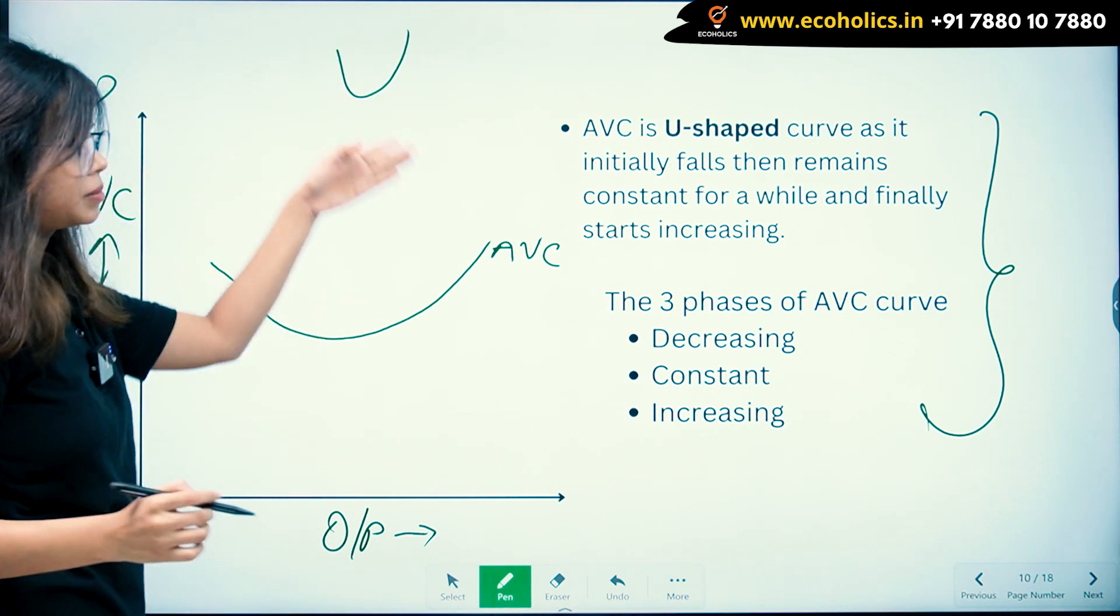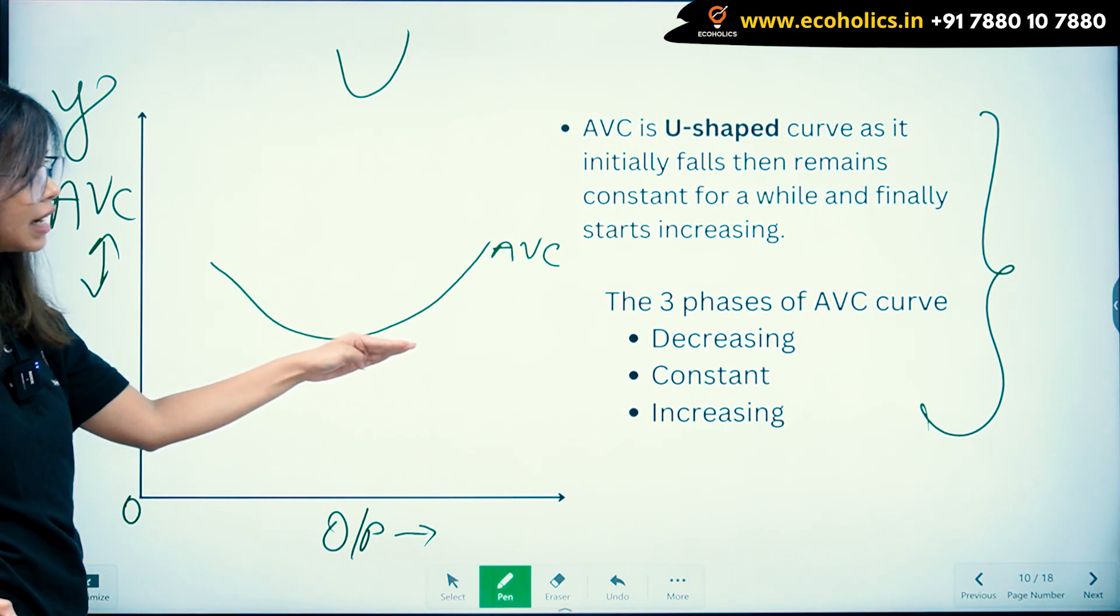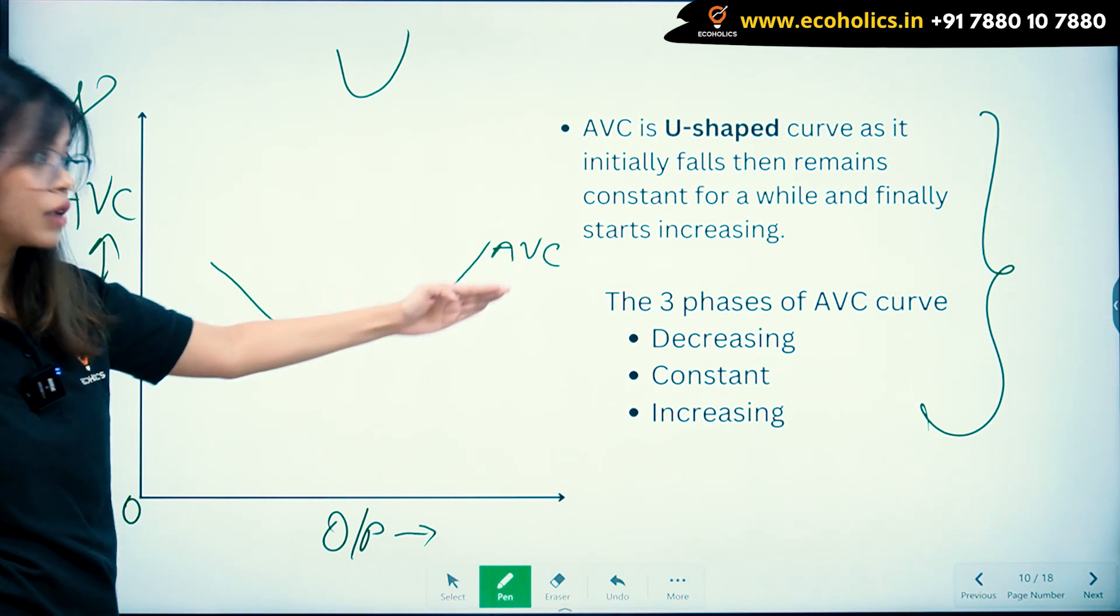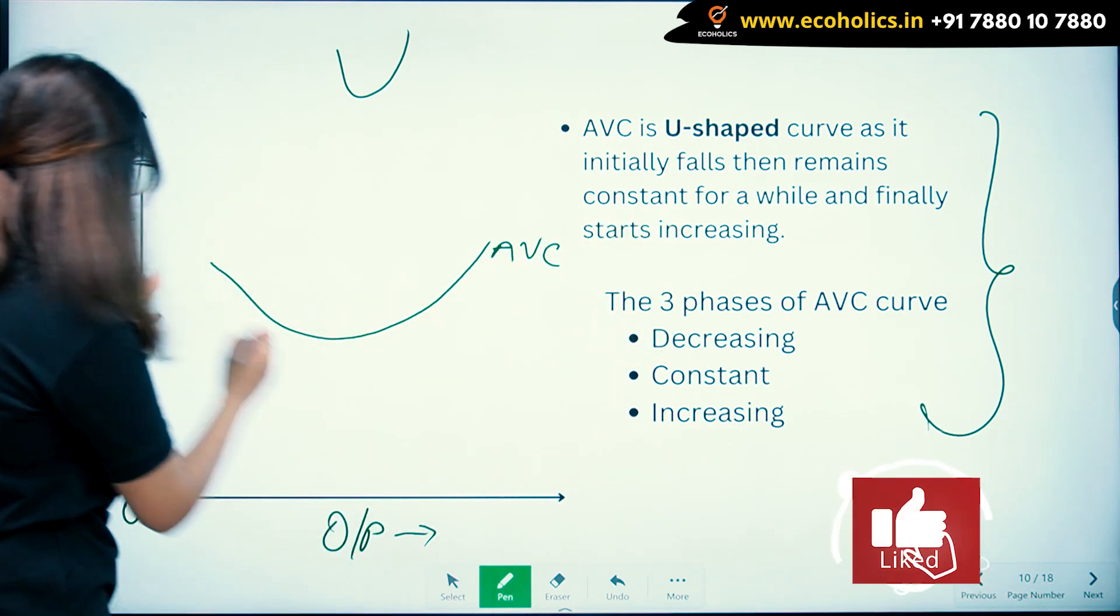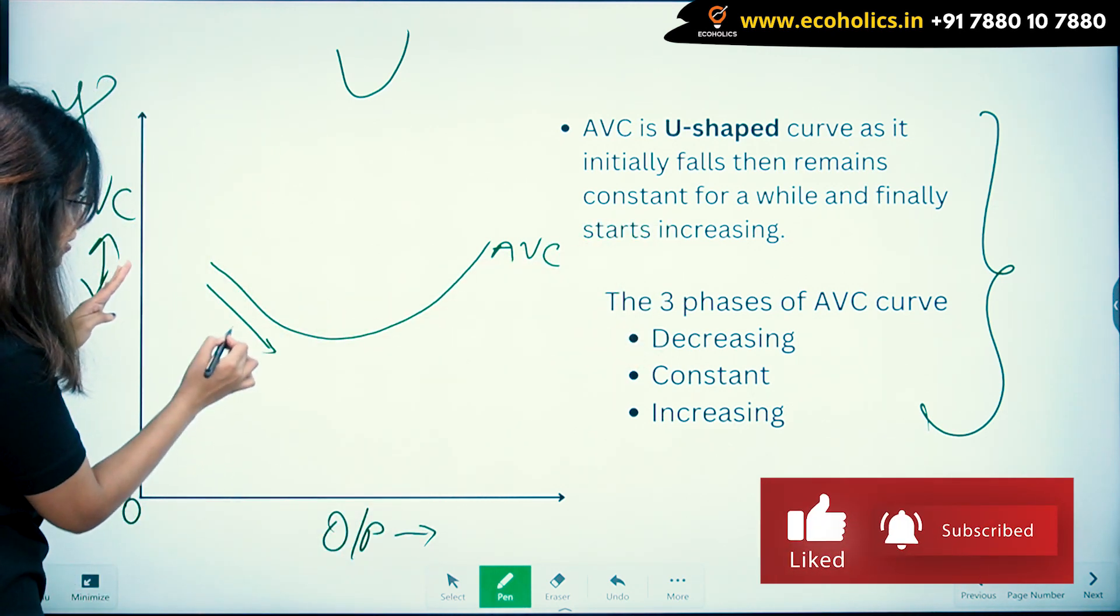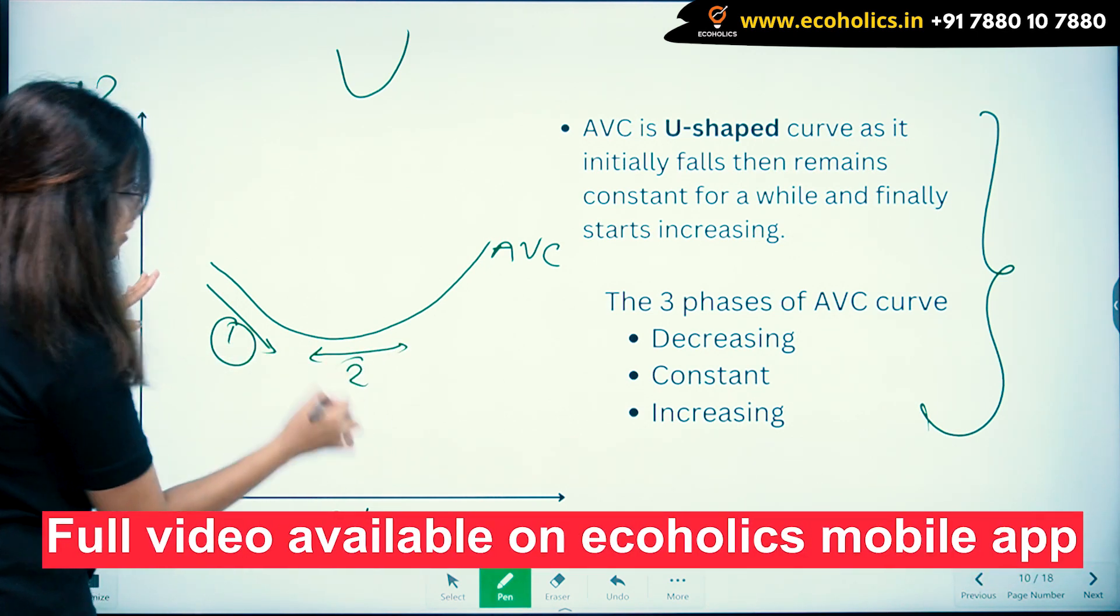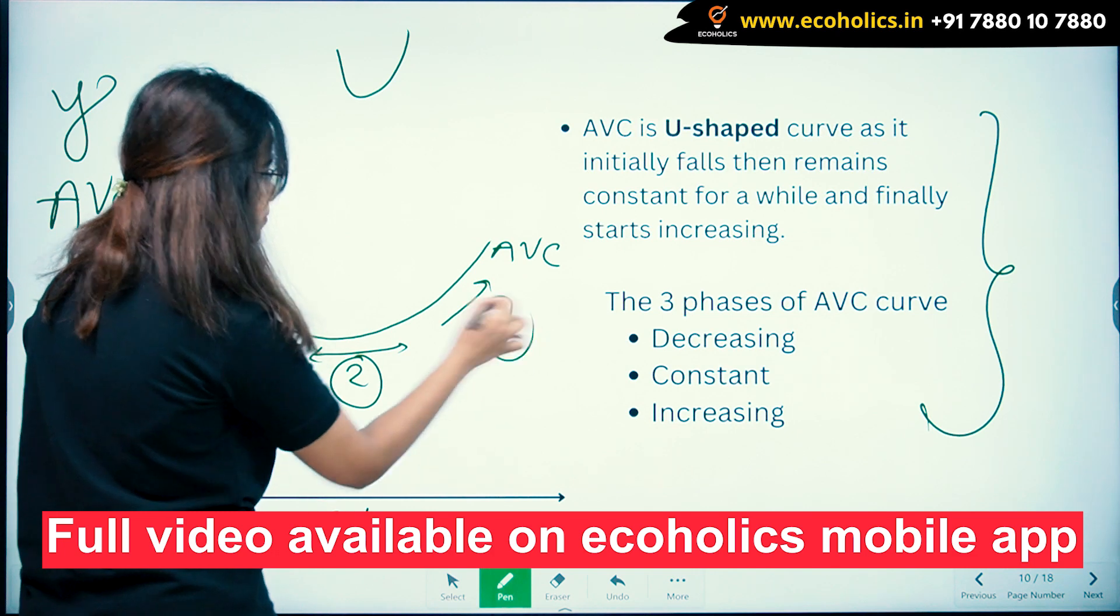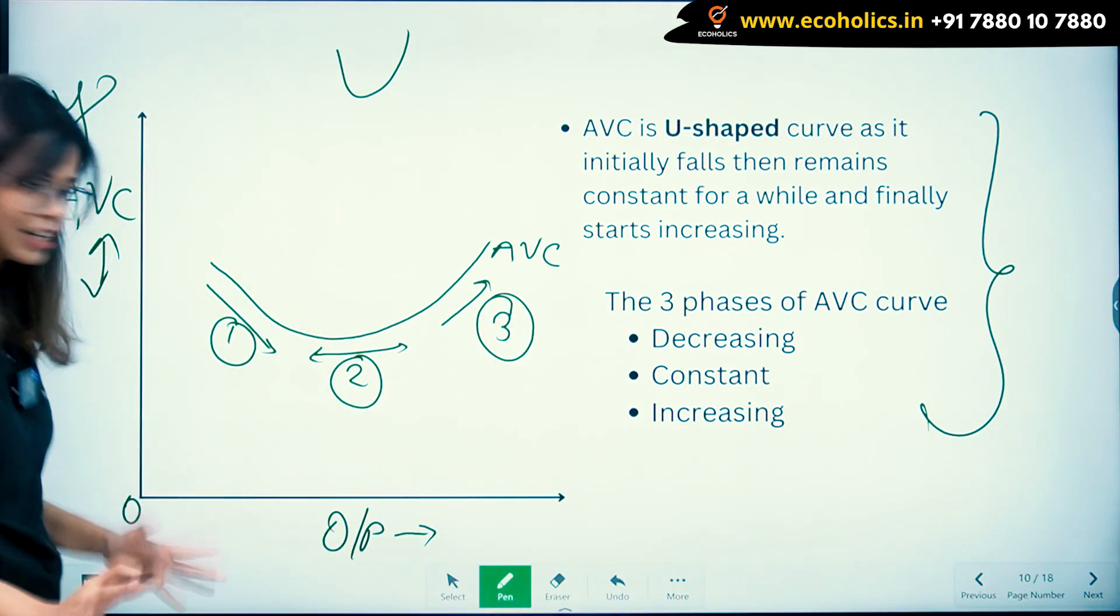It is U-shaped as it initially falls, then remains constant for a while, and finally starts to rise. The three phases of AVC curve: the decreasing state, the constant state, and the increasing state. I hope every information in this slide is clear to all of you.